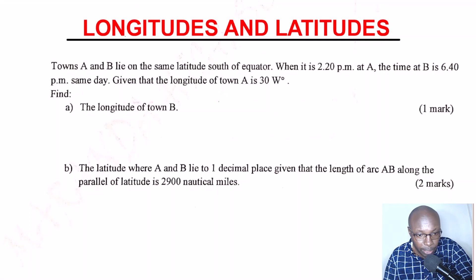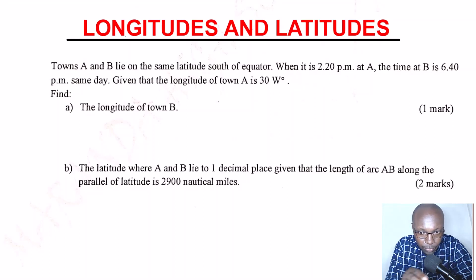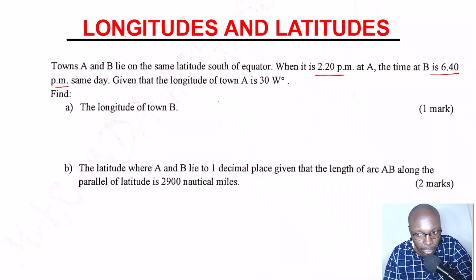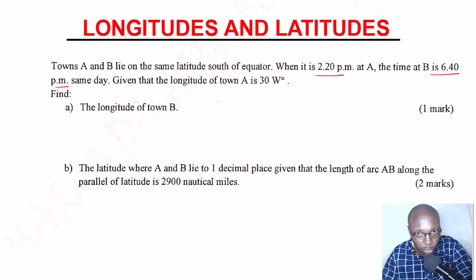Let's go to the first part. You require to get the longitude of town B. Given the time at A is 2:20pm and the time at B is 6:40pm, that alone will help you get the time difference between the two places. After getting the time difference, you'll be able to get the longitude difference, which will help you find the longitude of town B.